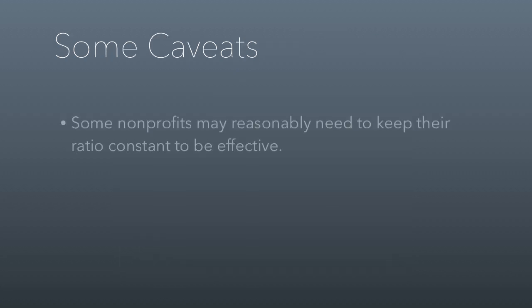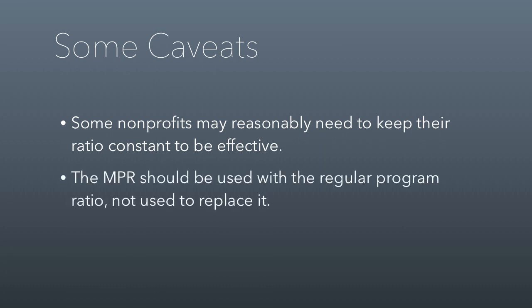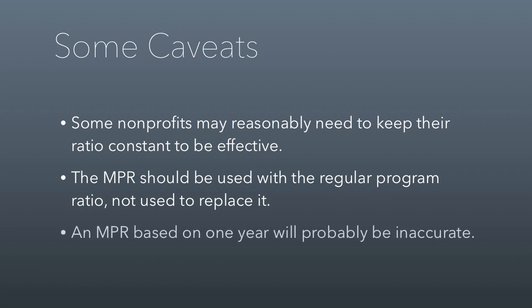Some caveats about this: some nonprofits may reasonably need to keep their ratio constant to be effective, so this is not a perfect measure, just like the program ratio itself is not a perfect measure of nonprofits' effectiveness. The marginal program ratio should be used alongside the regular program ratio, not to replace it — you could have a great marginal program ratio and a terrible average ratio. Also, a marginal program ratio based on one year will probably be inaccurate; this is a lot like tracking elasticity relative to the economy, and a one-year snapshot won't give you an accurate picture of how the nonprofit tends to spend new money.